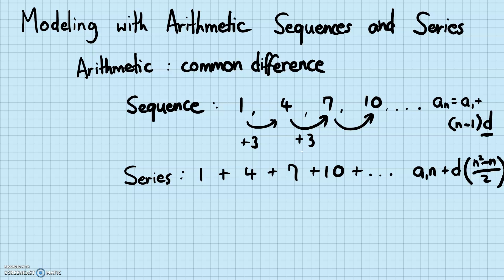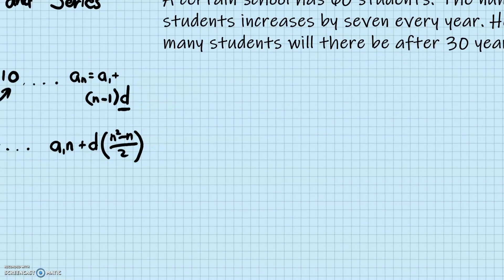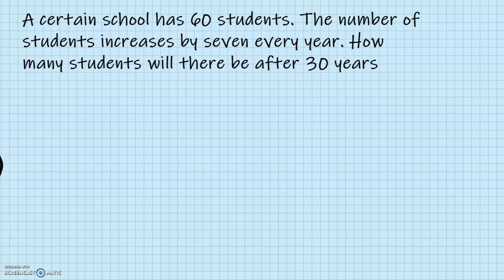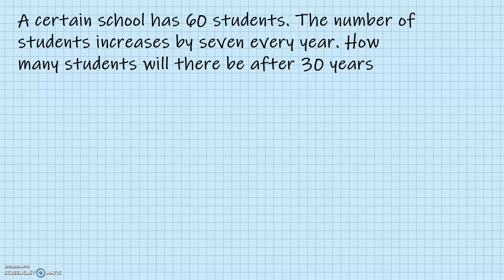Let's try some word problems concerning arithmetic sequences and series. Our first problem: a certain school has 60 students. The number of students increases by seven every year. How many students will there be after 30 years? To get a good picture, it's always helpful to write out the first few terms. This one starts with 60 students.